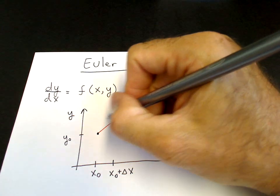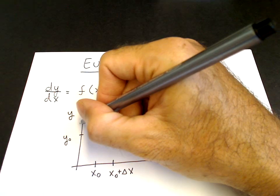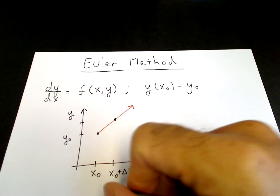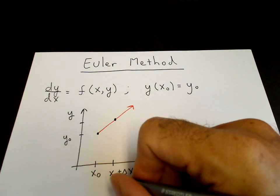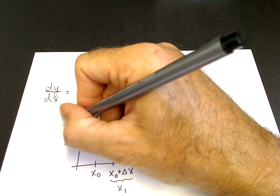So that this value here will be our next value of y. This one is what we call x₁. This will be our next value of y,